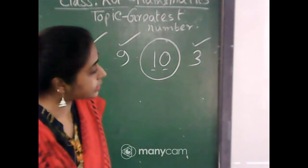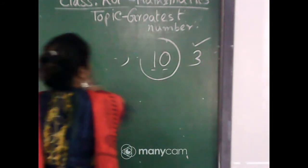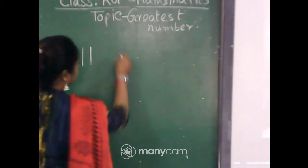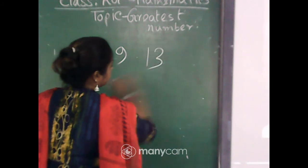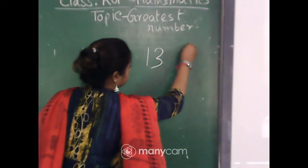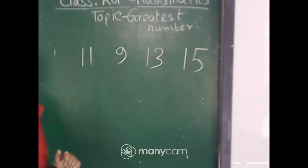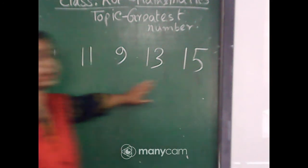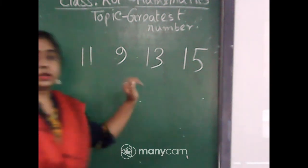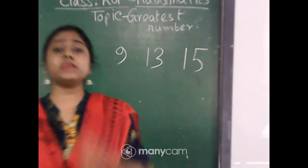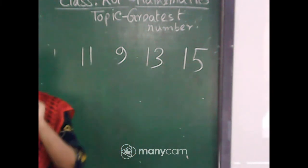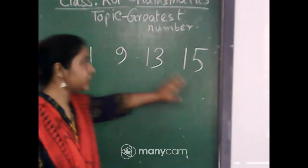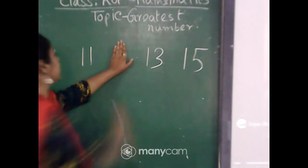Very good — so many correct answers! Now: 11, 9, 13, and 15. Here only 9 is a single-digit number, and the rest — 11, 13, 15 — are two-digit numbers. So 9 is obviously not the greatest number. Now among 11, 13, and 15, which one is the greatest?